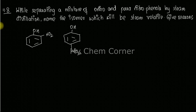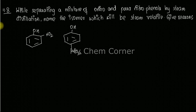These two can be separated by steam distillation, which means distillation using steam. Out of these two, we need to name which one is steam volatile and give a reason. Steam volatile means you can vaporize the compound using steam alone — you don't need additional heating; steam is more than enough.